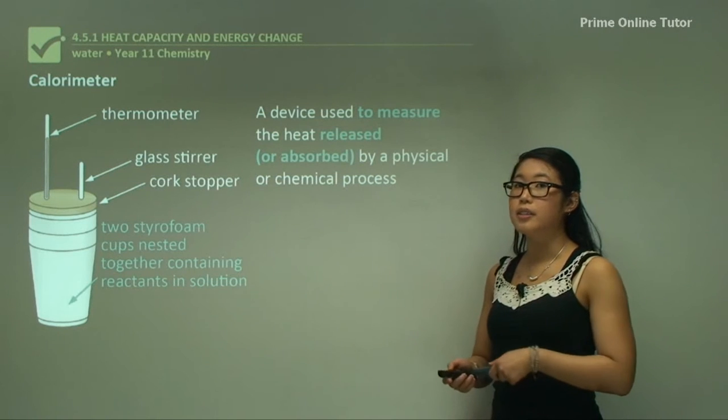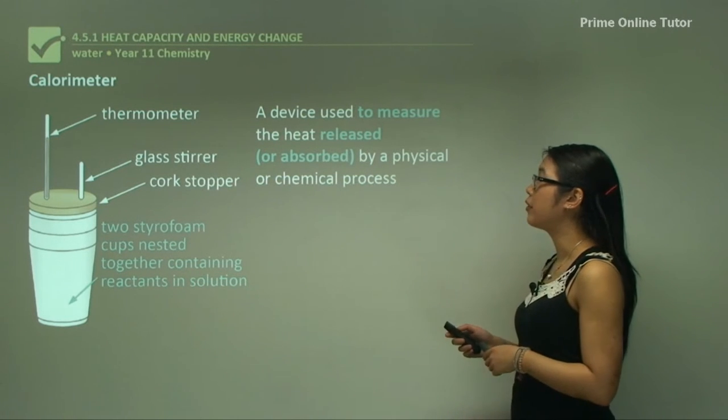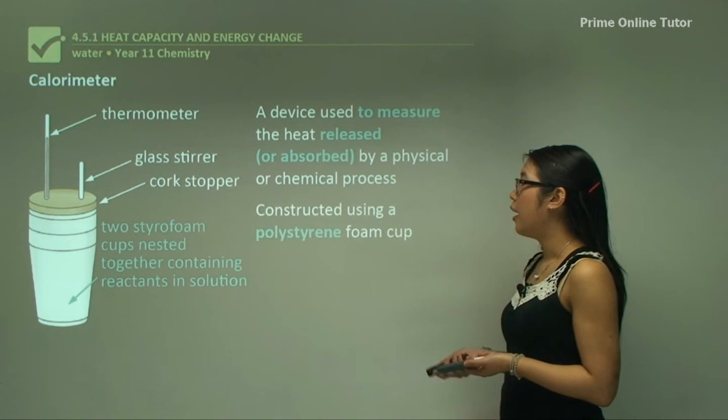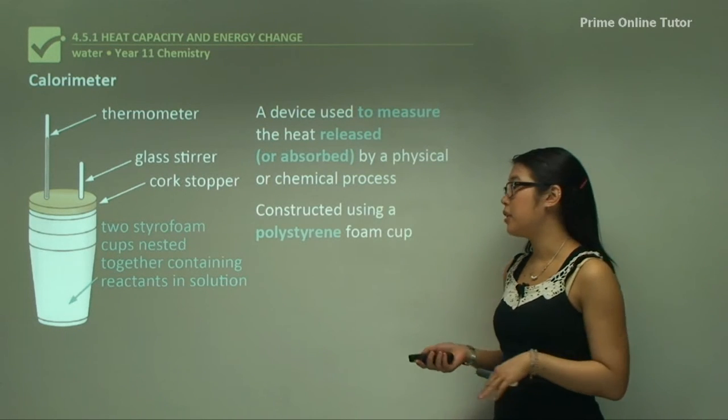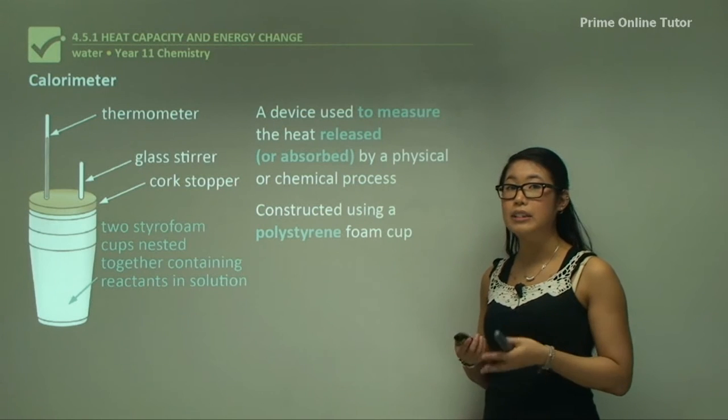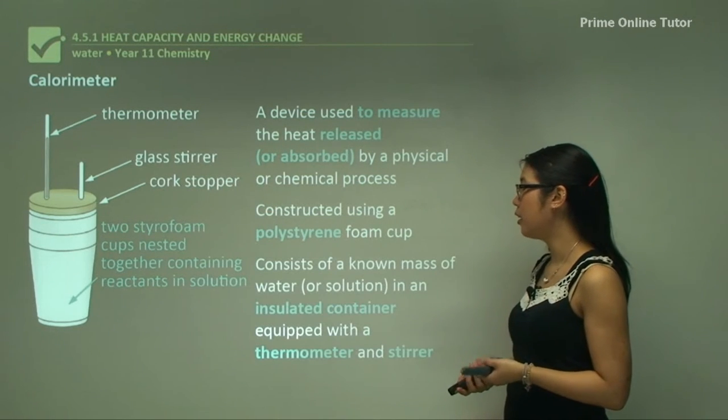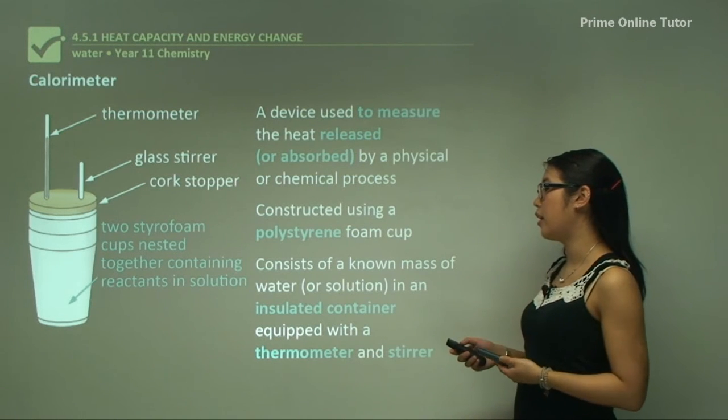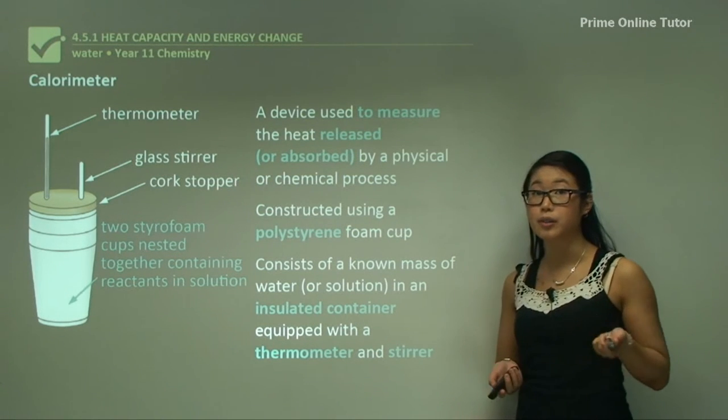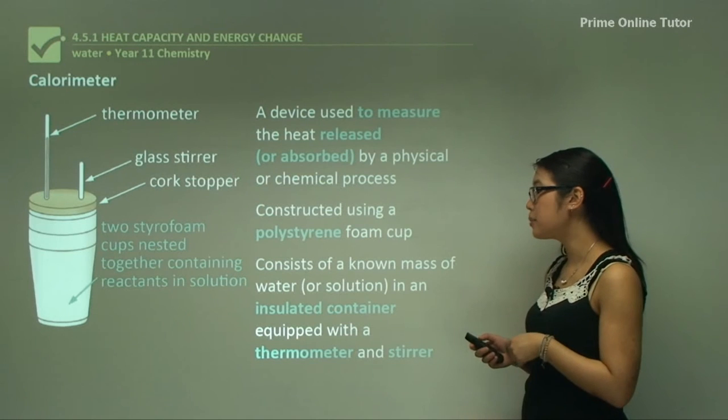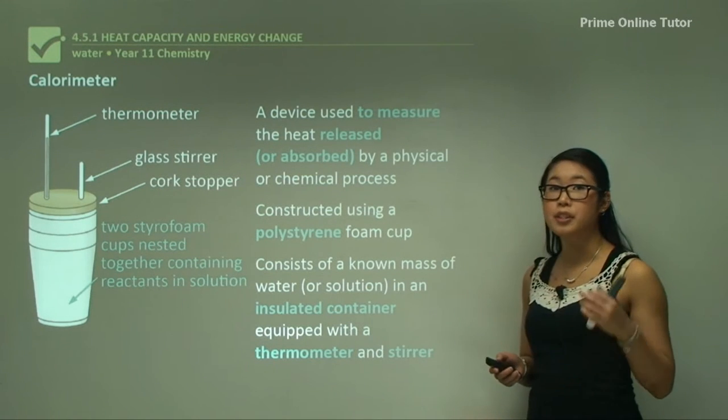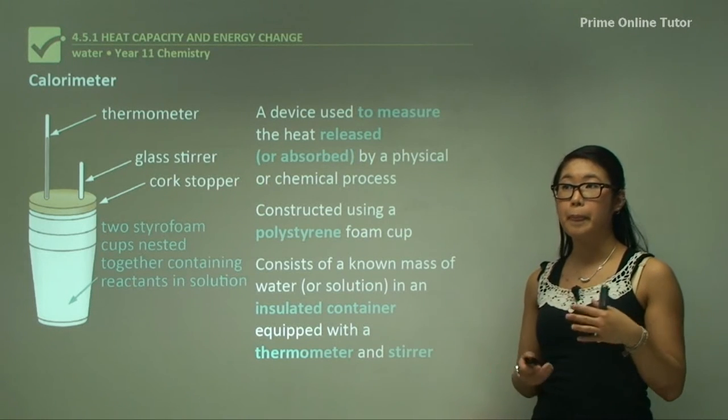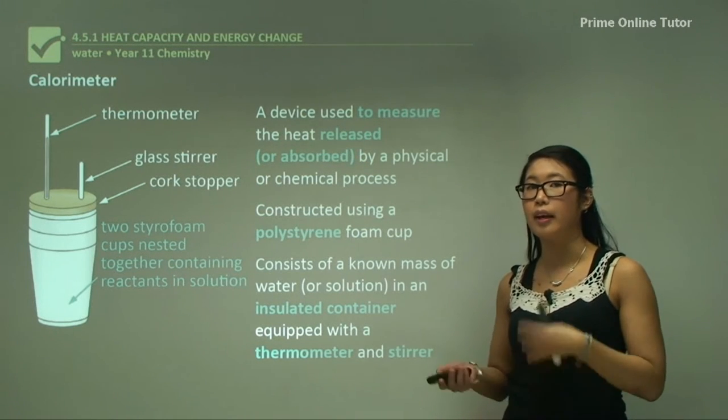A calorimeter is the device to measure the heat released or absorbed by a physical or chemical process. It's constructed in our labs with a polystyrene foam cup because it's a very good insulator for heat. It consists of a known mass of water or solution in an insulated container, equipped with a thermometer to see temperature changes and a stirrer to make sure all reagents are mixed well together.